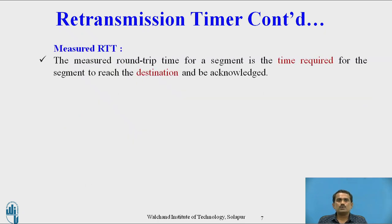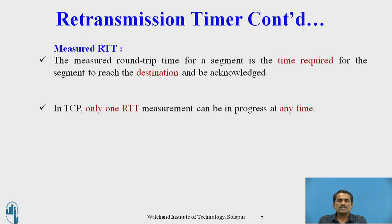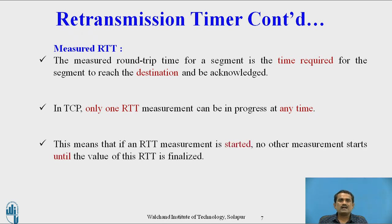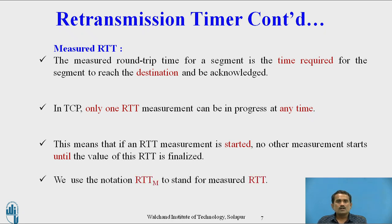The measured round trip time for a segment is the time required for a segment to reach the destination and be acknowledged. In TCP, only one RTT measurement can be in progress at any time, meaning that if an RTT measurement is started, no other measurement starts until the value of this RTT is finalized. We use the notation RTT_M to stand for measured RTT.